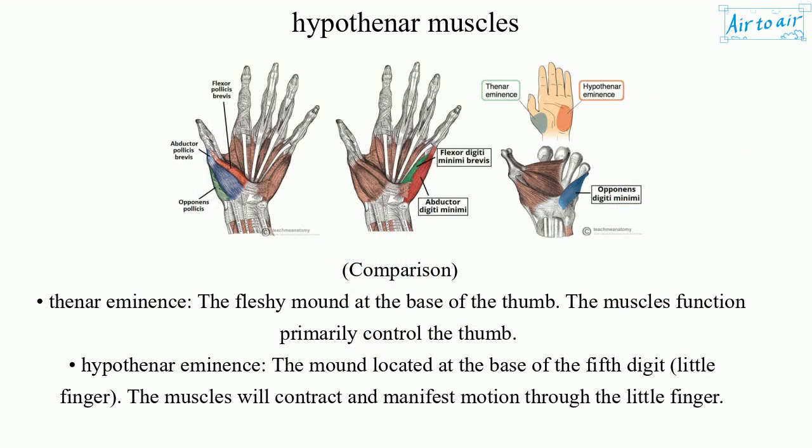Comparison: the thenar eminence is the fleshy mound at the base of the thumb, and its muscles function primarily to control the thumb. The hypothenar eminence is the mound located at the base of the fifth digit — the little finger — and its muscles contract to manifest motion through the little finger.